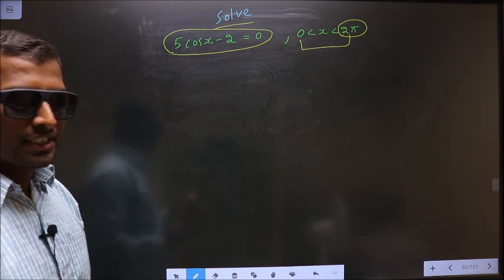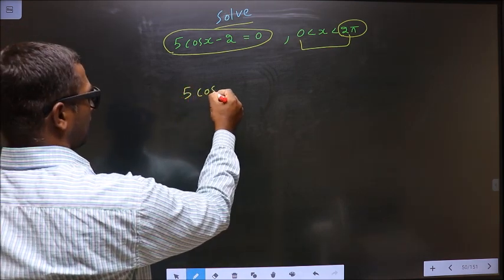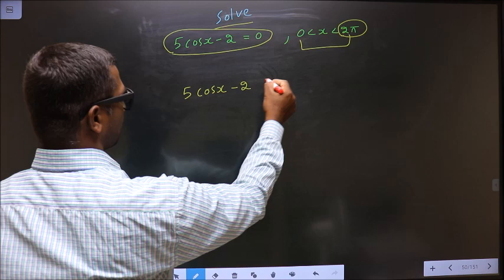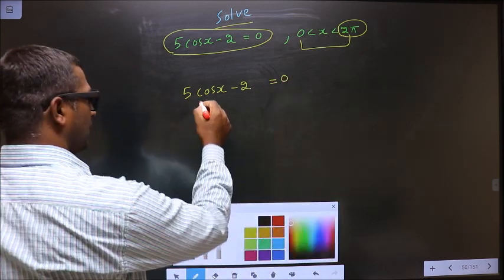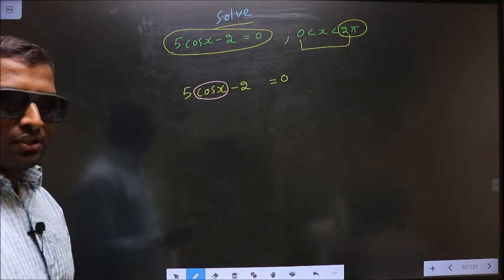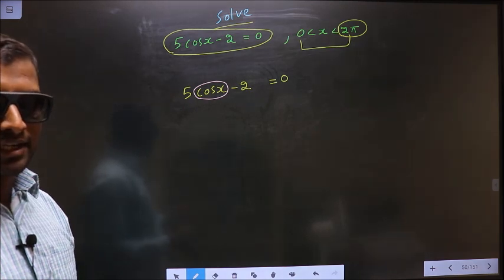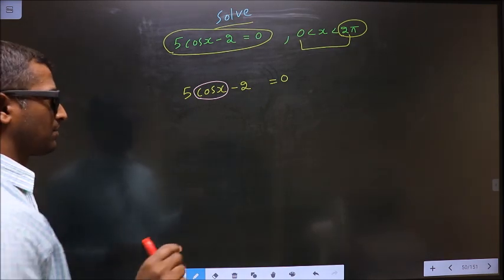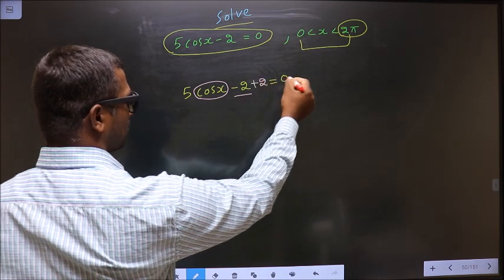Now given equation is 5 cos x minus 2 equal to 0. Here you have cos x. So now you make cos x the subject. Remove all the connections connected to cos x one by one. First, to remove minus 2, you add 2 on both sides.